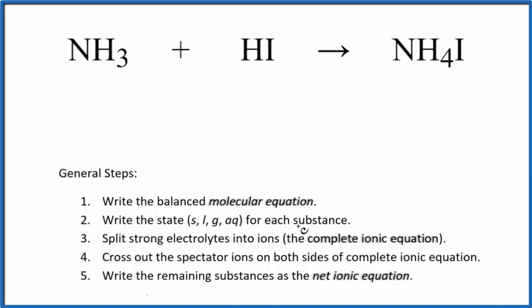Next, we write the state for each substance. We're going to assume here that this ammonia is aqueous, dissolved in water. We know that hydroiotic acid, that's a strong acid, so that's going to dissolve in water. It'll also dissociate into its ions. And then ammonium compounds, compounds with ammonium ion, they are very soluble. They'll dissolve and dissociate.